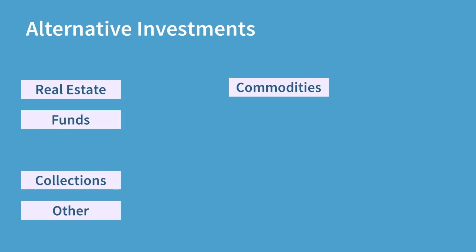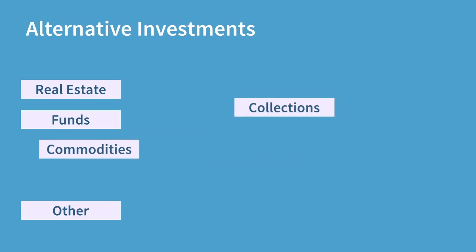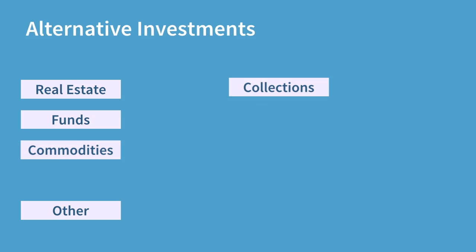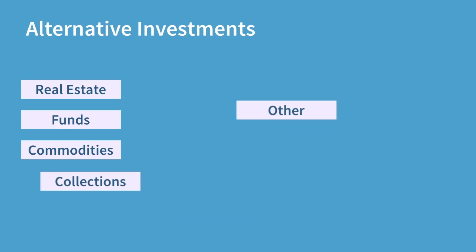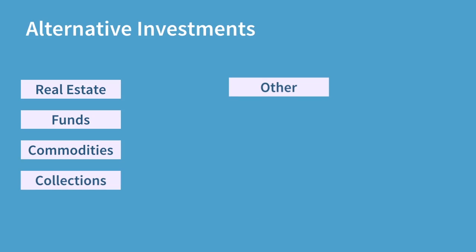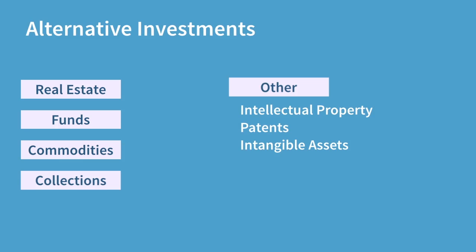Next we have collections — a slightly broader class which includes investments like wine, artwork, automobiles, watches, jewellery, and stamps. And finally there is a section marked other. Under this bracket we are looking for things like intellectual property, patents, and other intangible assets.